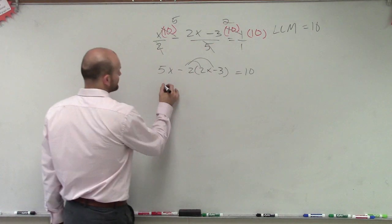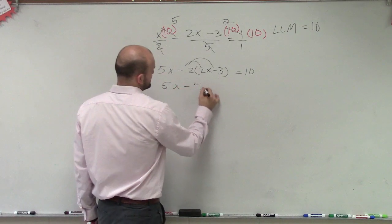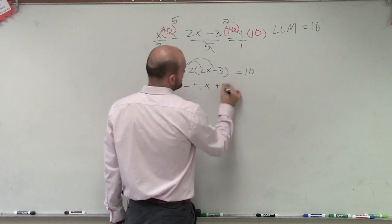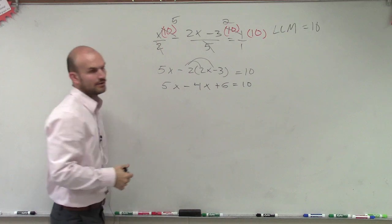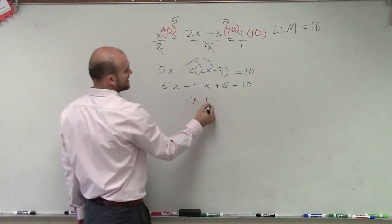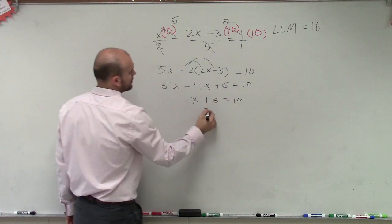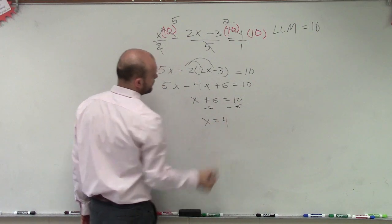So therefore, we have 5x minus 4x plus 6 equals 10. Right? 5x minus 4x is x plus 6 equals 10. Minus 6, minus 6, x equals 4.